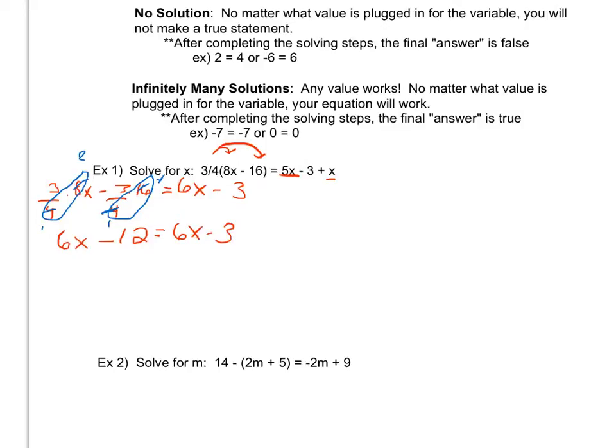From here I want to make sure I have a variable only on one side. So I'm going to pick one of my x's, either the x is on the left or the x is on the right. So let's say I pick the x's on the left. In order to get rid of this 6x, since it's a positive 6x, this negative belongs to the 12, I'm going to go ahead and subtract 6x. But if I subtract 6x from the left, I have to do it to the right.